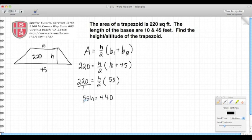Now the 55 and the h are joined through multiplication. So to undo that, I divide. In this case, dividing both sides by 55, the 55 simplifies down to just h. And on the right hand side, I have